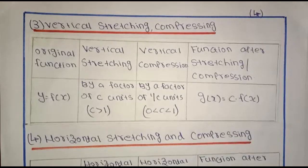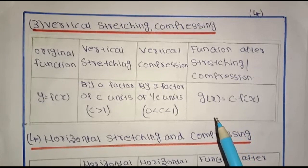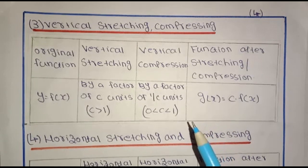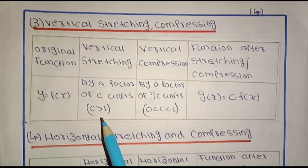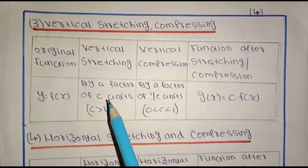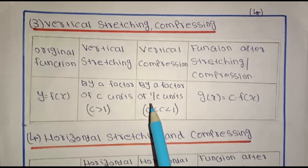This is vertical stretching and compressing. If the constant is greater than 1, the graph will stretch and expand by a factor of c units. If the constant is between 0 and 1, the graph will be compressed by a factor of 1 over c units.